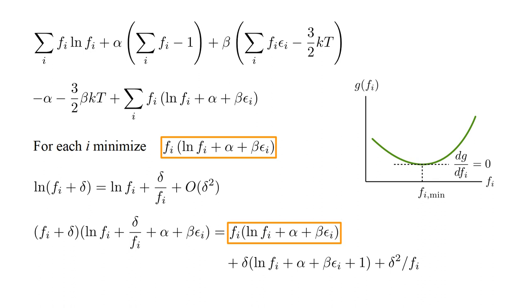Expanding the product and grouping terms by factors of delta, we first get our original function, plus a term proportional to delta, and a term proportional to delta squared. We can neglect the delta squared term. Then, the condition for a minimum is that the delta term must vanish. For non-zero delta, this requires that ln f_i plus alpha plus beta epsilon_i plus one vanishes.